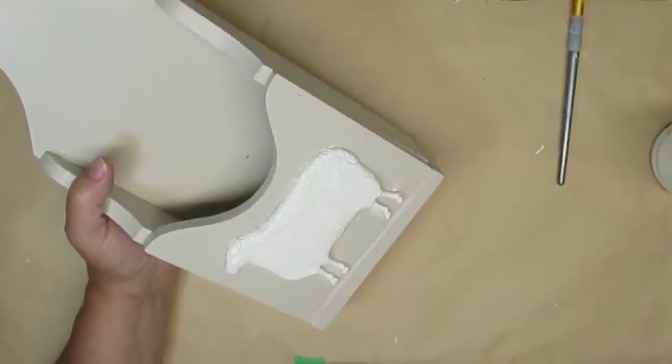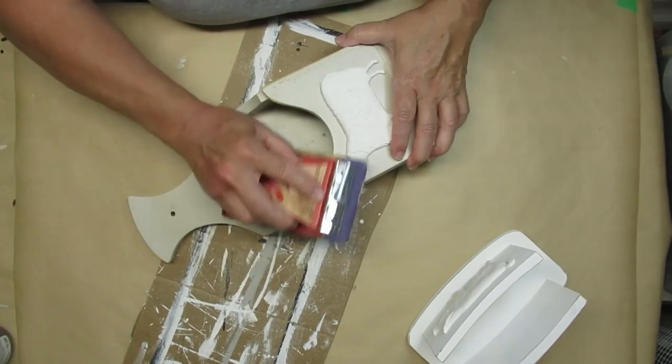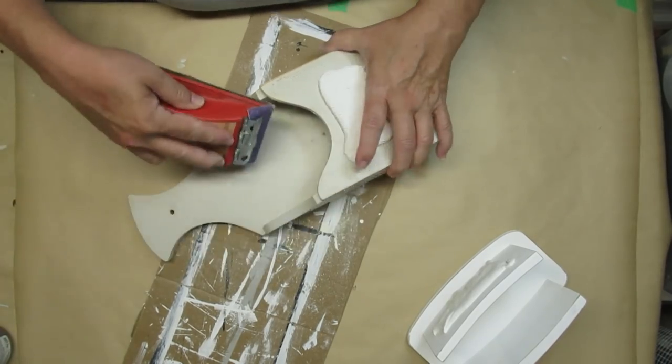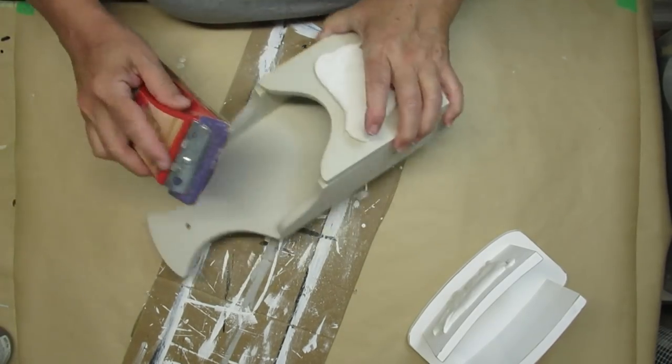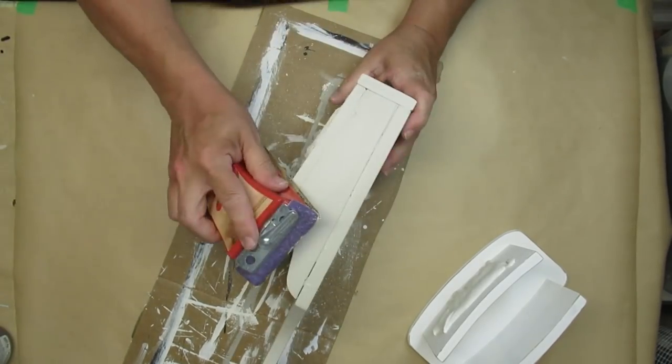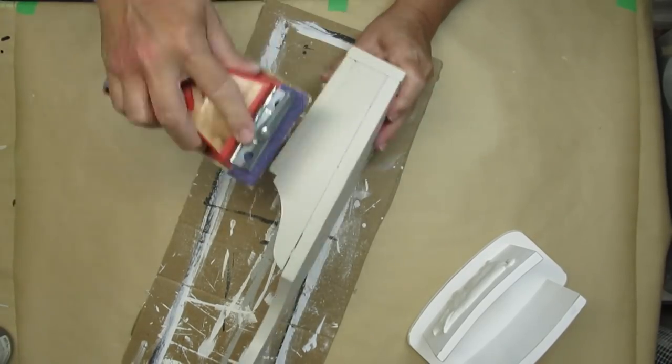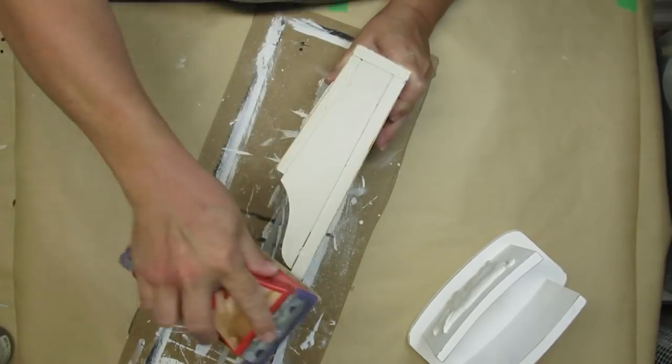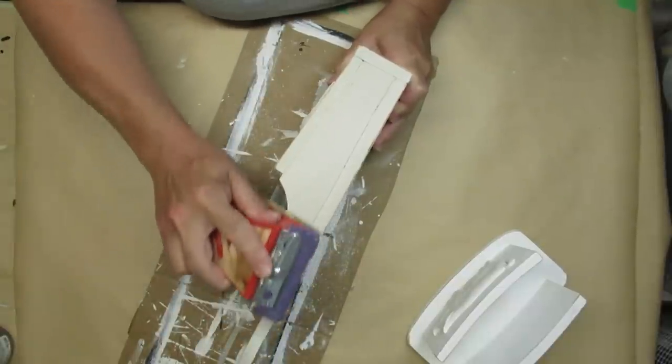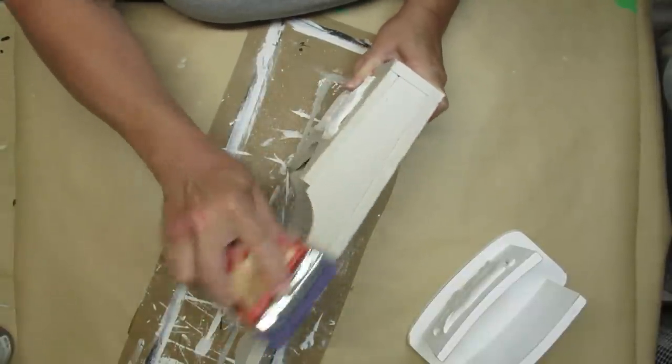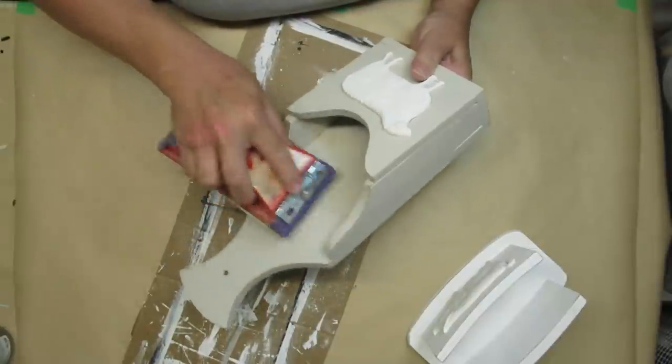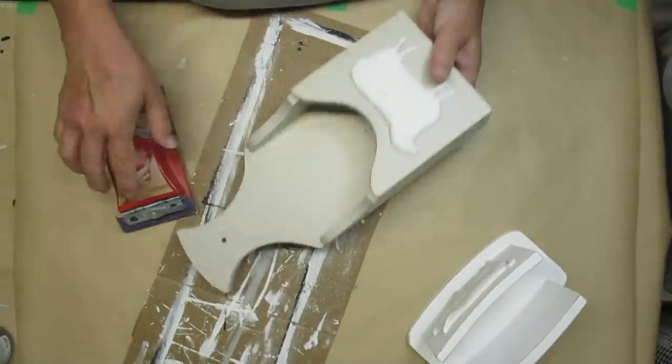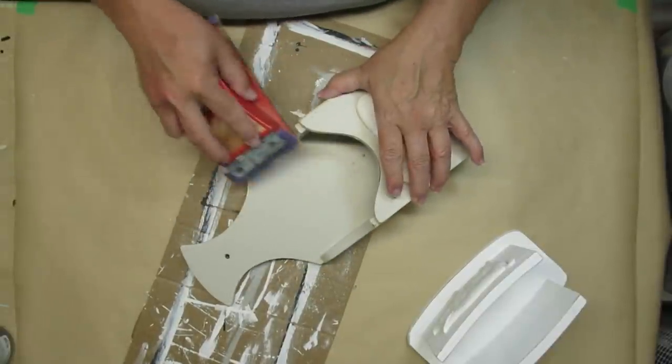I'm using some heavy grit sandpaper. I believe this is an 80 grit because I want to be able to make quick work of getting down to the wood. I've got two coats of paint. I'm going to really get down to the wood, especially on the corners. You can see here I hit that one really hard. I want a lot of that wood to show through. I want this to look really old and used.